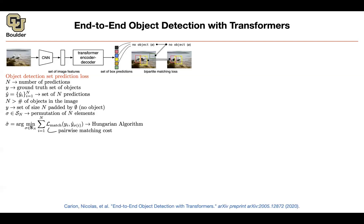You are going to write down an objective function. For this objective function, you are not trying to optimize the parameters of your neural network — you are trying to find the correct permutation, which is a discrete task. You are not going to be able to do gradient descent. Because it is discrete, you are going to use discrete optimization techniques. This has nothing to do with deep learning. To find sigma, you are going to use the Hungarian algorithm.